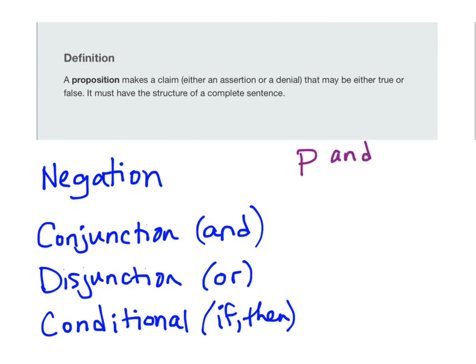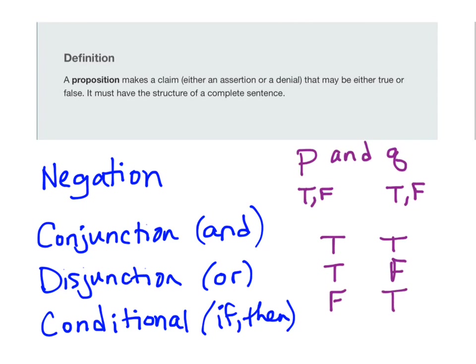Let's look at a conjunction — let's say we have P and Q. How many rows would we have in a truth table? We know that P could be true or false, and Q could also be true or false. It might be tempting to think there are just two rows, but look at all the ways we could combine those things. The first part could be true and the second true, the first true and second false, the first false and second true, or both false. So there are actually four different ways for this overall statement P and Q to be true or false.